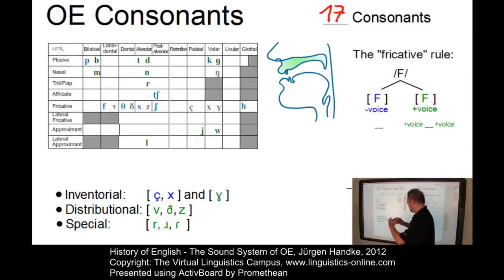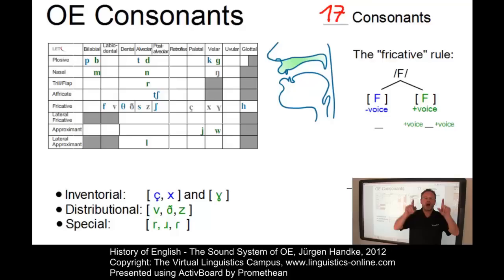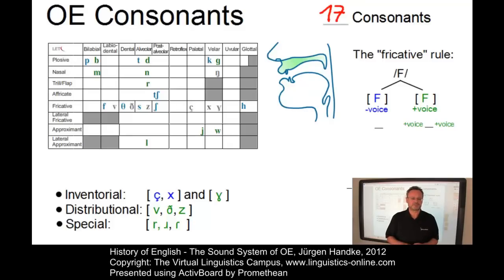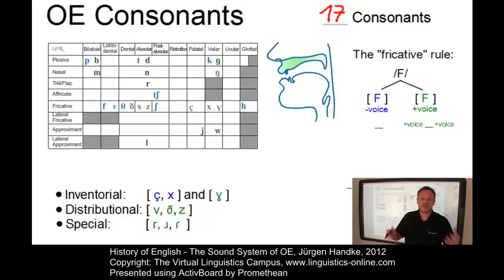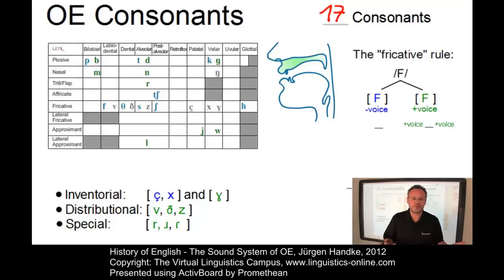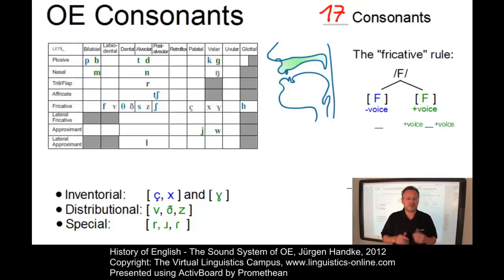Finally, we have some special sounds in Old English concerning the pronunciation of the R. One thing assumed for Old English is a high degree of rhoticity, which means that the R was pronounced in all contexts, even after vowels. Secondly, it is hard to say what type of R was used — was it the alveolar trill, the alveolar approximant, or the alveolar flap? It is hard to say. Thus, it's up to you which one you use. I normally use the alveolar trill as the primary allophone of R, but we could say the allophones of R are in free variation.